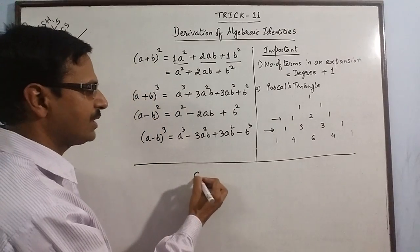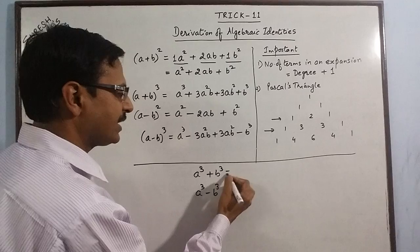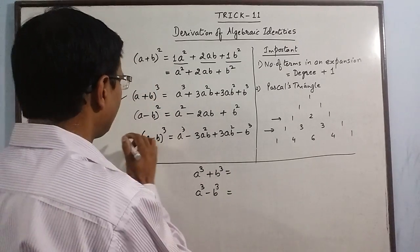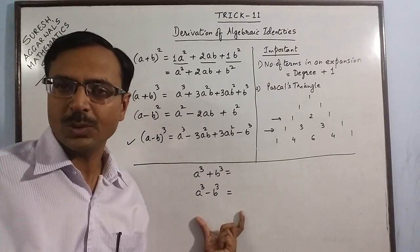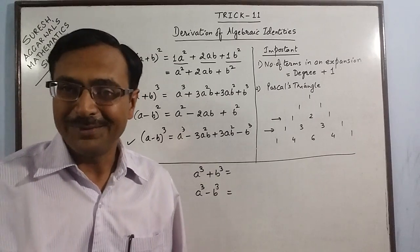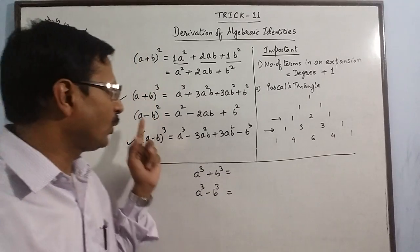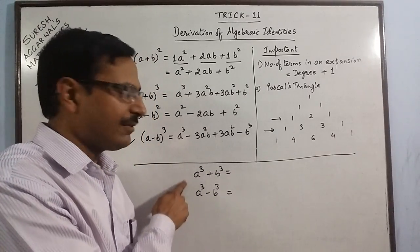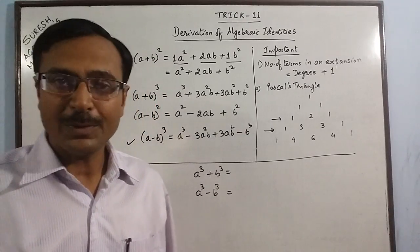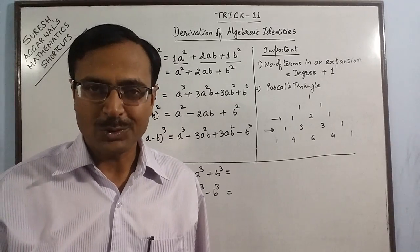Simultaneously, we can derive the formulas for A cubed plus B cubed and A cubed minus B cubed using these two identities — A plus B whole cube and A minus B whole cube. These will be covered in the next video, that is trick number 12. Until then, practice writing these four identities: A plus B whole square, A minus B whole square, A plus B whole cube, and A minus B whole cube. Keep learning students, keep enjoying, and share, subscribe, and tell your friends about this YouTube channel if you like it.